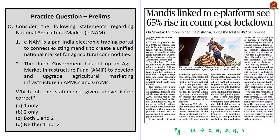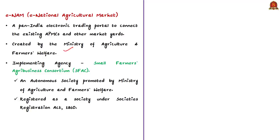Now let us take up this question which is based on e-NAM. We have framed this question based on the news article in the business section of today's Hindu newspaper. In this context, you should know about the National Agriculture Market and how it aims to help double farmers' income by 2022. e-NAM is an electronic trading platform created by the Ministry of Agriculture and Farmers' Welfare. It aims to connect existing Agriculture Produce Market Committees and regulated marketing committees. Even private market committees and unregulated markets can be connected, creating a unified online national market for agriculture commodities. e-NAM utilizes the physical infrastructure of mandis through an online trading portal, enabling buyers situated even outside the state to participate in local-level trading.